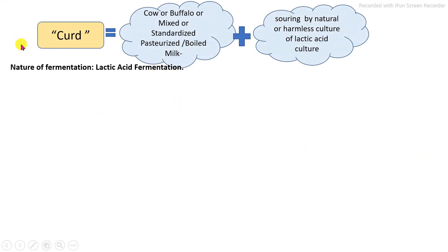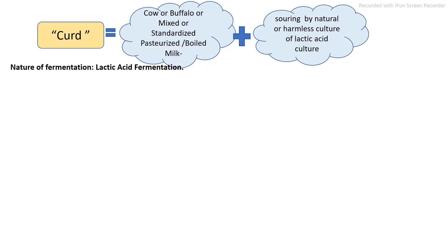What is the definition of Dahi as per the Food Safety Standards of India? Dahi or curd is the product obtained by the lactic acid fermentation process, in which milk — cow milk, buffalo milk, mixed milk, or standardized milk — is used. All milk must be properly pasteurized or boiled, and after pasteurization, fermentation is carried out by addition of lactic acid bacteria culture which is required to be completely pure culture, harmless, or by natural fermentation.